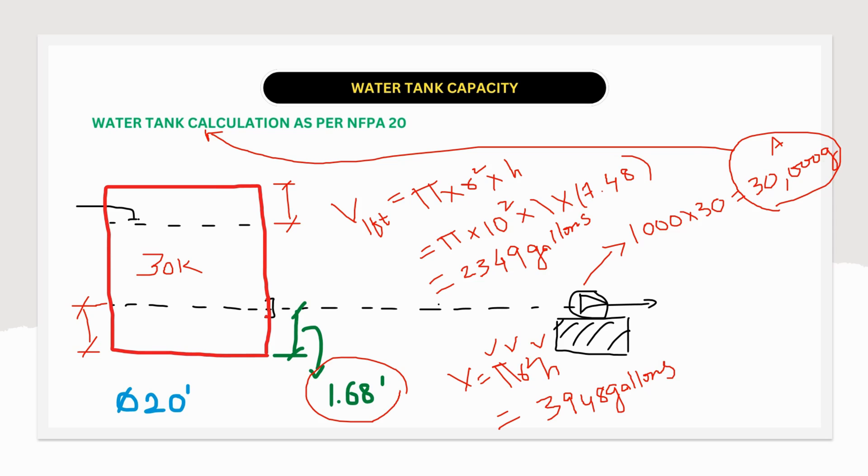Now we need to add 30,000 gallons plus 2,349 gallons plus 3,948 gallons. Then only we are going to get the actual water tank size required based on NFPA 20 requirements. So the total needed capacity would be A, B and C. So when we add this, the total capacity would be 36,297 gallons.